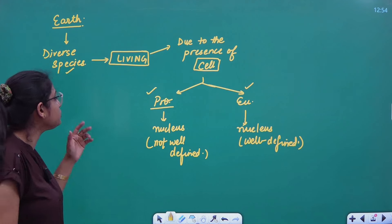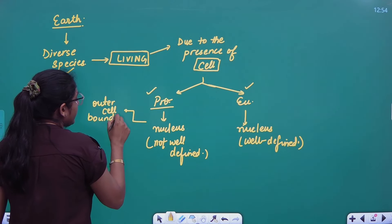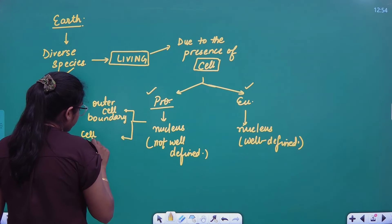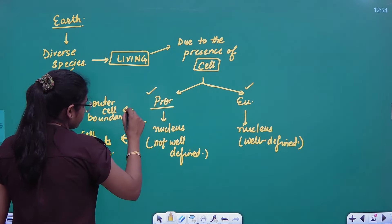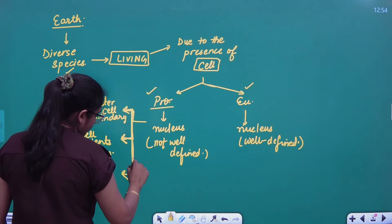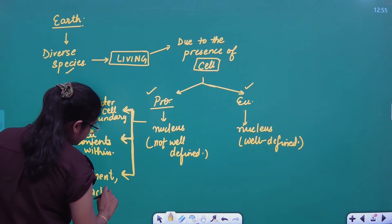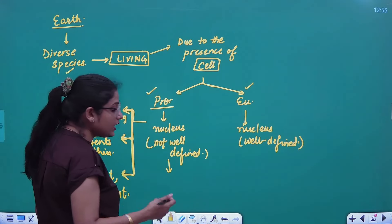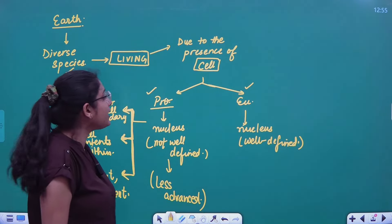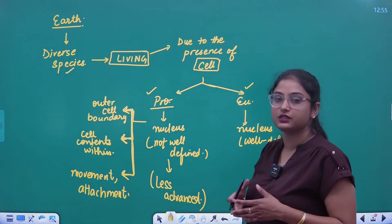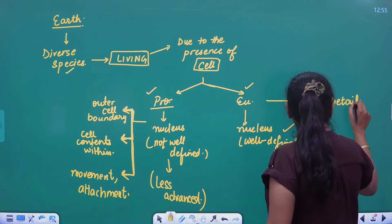In the prokaryotic cell, the nucleus is not well-defined, and we studied structures like the outer cell boundary, the cell contents within, movement structures, and attachment structures. These were all discoveries in the prokaryotic cell. Because they had no nucleus, they were less advanced and made shortcuts for their functions. Whereas the eukaryotic cell has a proper nucleus and a proper control center, so it can handle many more functions — that's why we study eukaryotic cells in detail.